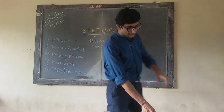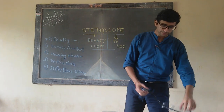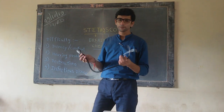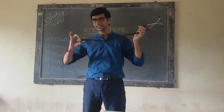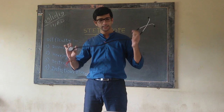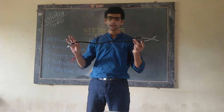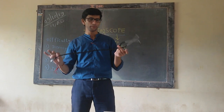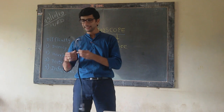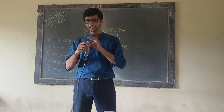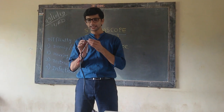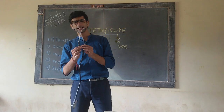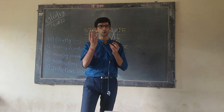Let's understand the different parts of the stethoscope. The stethoscope consists of the chest piece, the tube — which is technically around 12 inches in measurement — then the connector, and the earpiece.